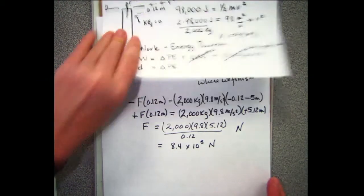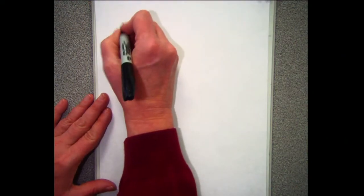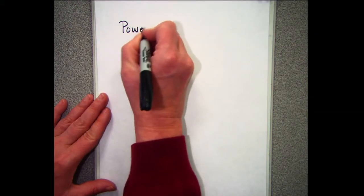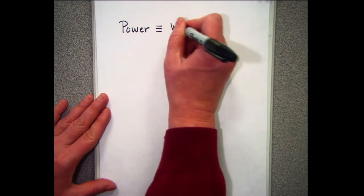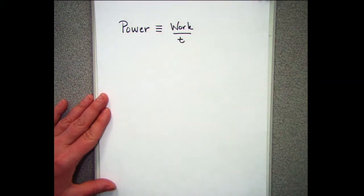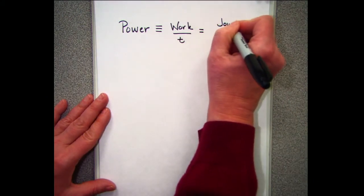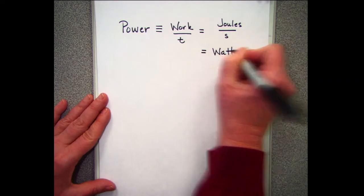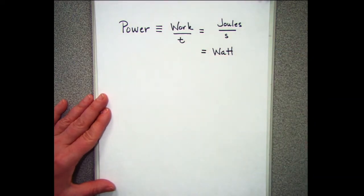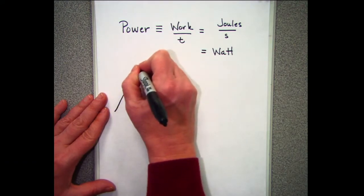Now we're going to introduce a new concept: power. Power is defined as work divided by time, so the units are joules per second, which is defined as a watt.